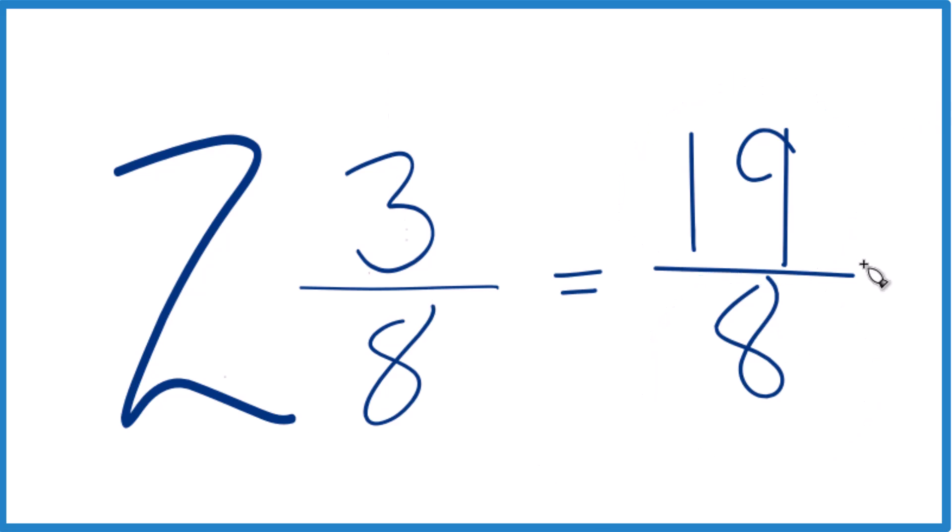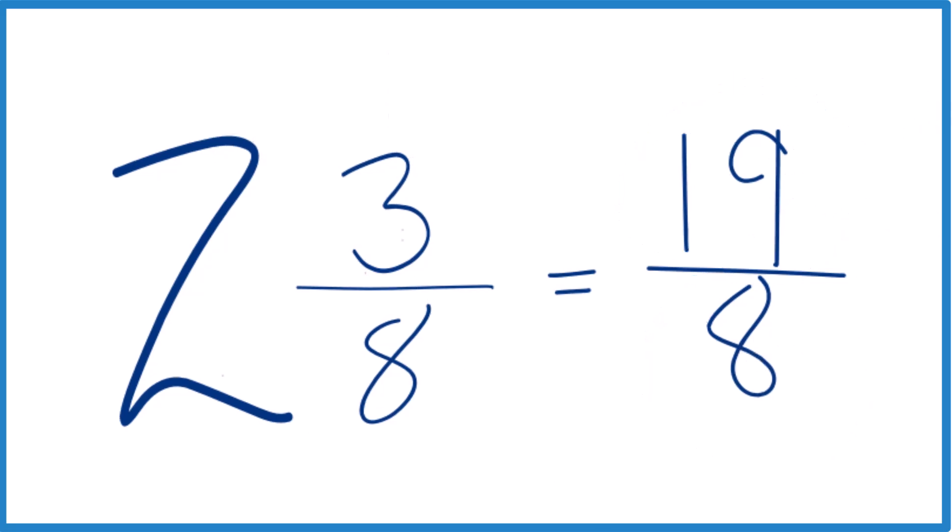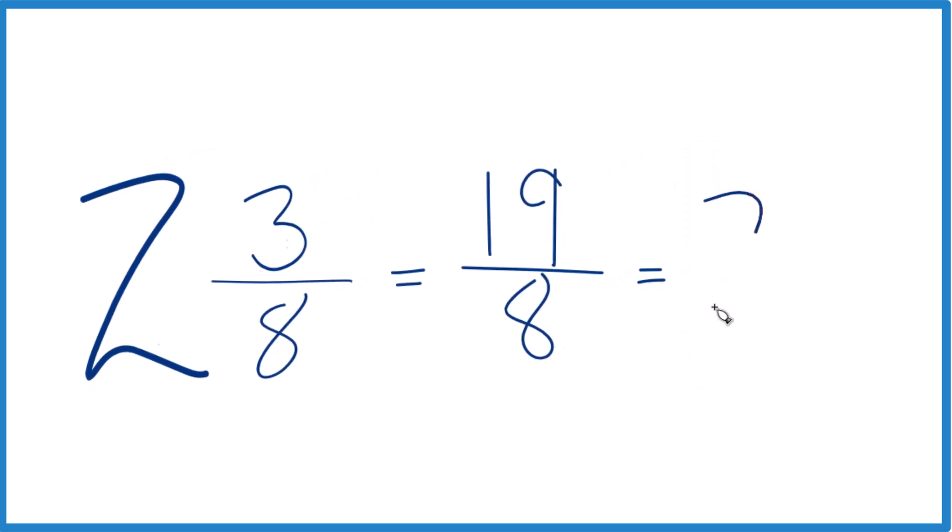We can even check our work, because 8 goes into 19, 2 times, so 2 times 8 is 16, with 3 left over. Bring that 8 across, you get 2 and 3 eighths. That's what we started with, so we know we did this correctly.